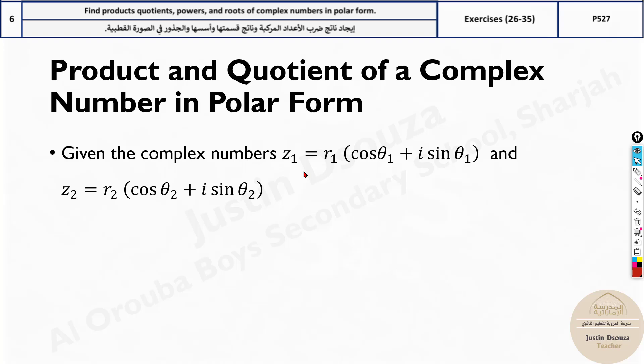If there are two complex numbers given in polar form, they'll be in terms like this: R1 cos theta 1 plus i sine theta 1, and the next one is R2 cos theta 2 plus i sine theta 2. You can multiply them both.